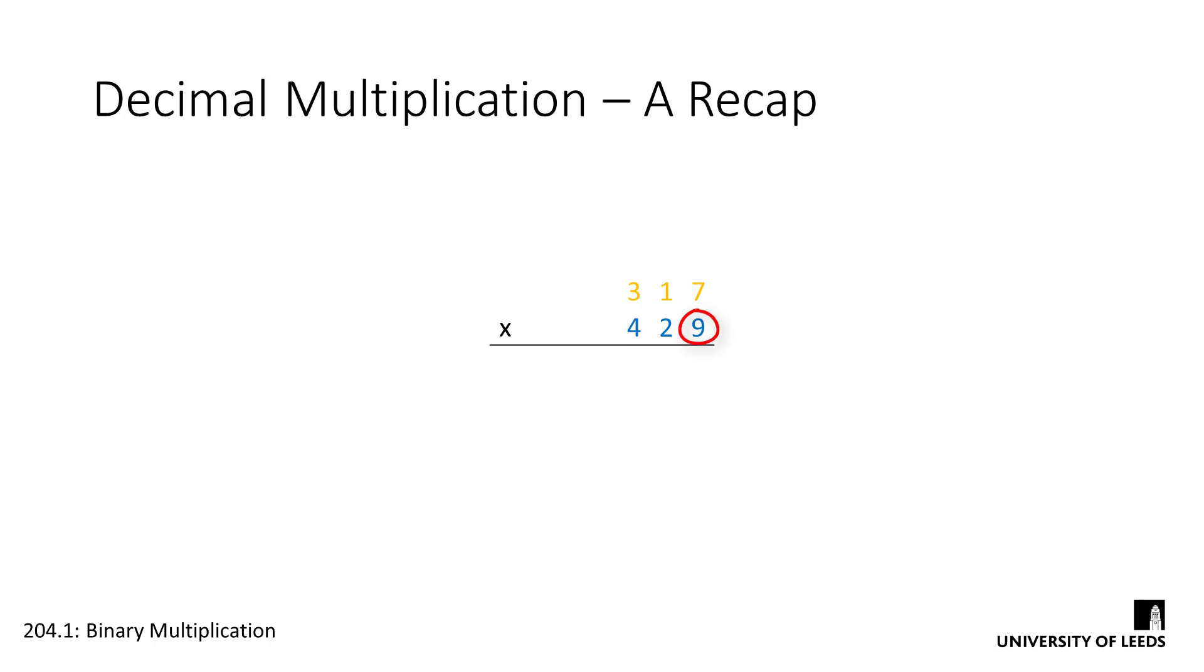We start with the smallest digit of the multiplier and multiply each digit of the multiplicand in turn. As we've learned our times tables, we just pull the results of these single digit multiplications from our memories. We don't actually need to do any adding.